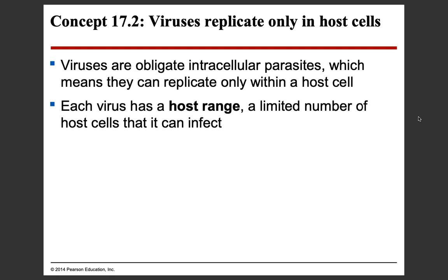Viruses replicate only in host cells. One of the classifications of life is the ability to reproduce. Viruses cannot reproduce unless they're inside of something alive — a host cell — because all cells are the smallest unit of life. Viruses are obligate intracellular parasites because they take over your cell's machinery in order to do their bidding, meaning they can only replicate within a host cell. A bunch of virus particles just chilling in the environment cannot make more virus — they're just particles, not alive. Once they get inside of a host cell, whether you inhale them or touch something contaminated, that's when it gets dangerous.